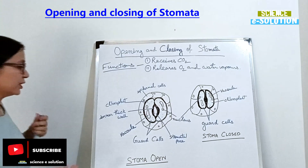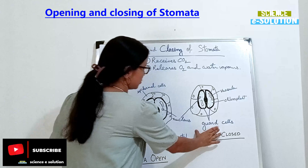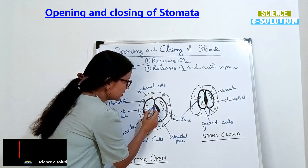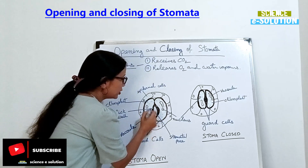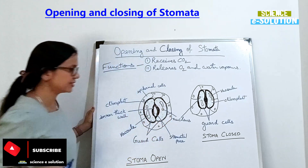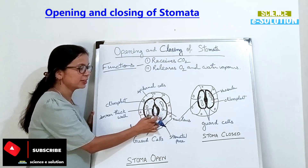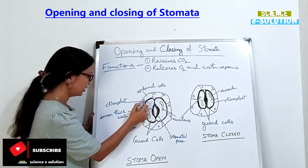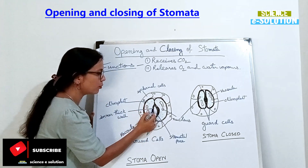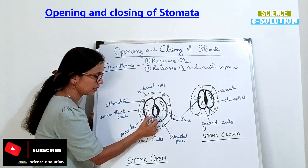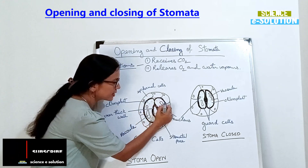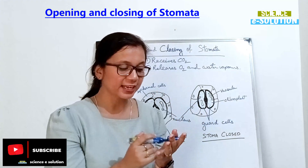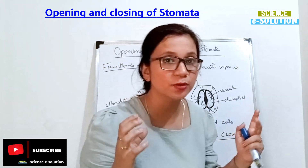Now how do stomata open and close? This stomatal pore — you can see here — is guarded by two B-shaped guard cells. So the stomatal pore is guarded by two guard cells. These guard cells have a thin wall on the outside and a thick wall on the inside. This thinner wall on the outer sides of the guard cells allows the intake of water, meaning water is absorbed more and more.